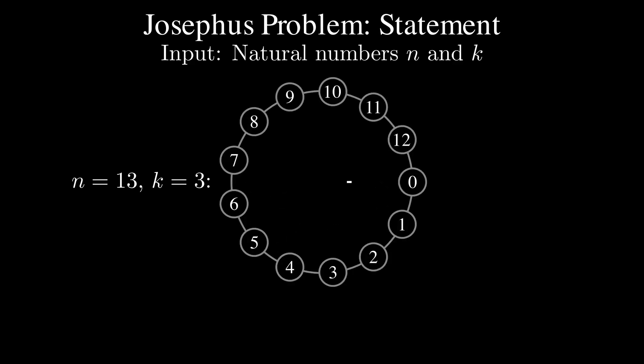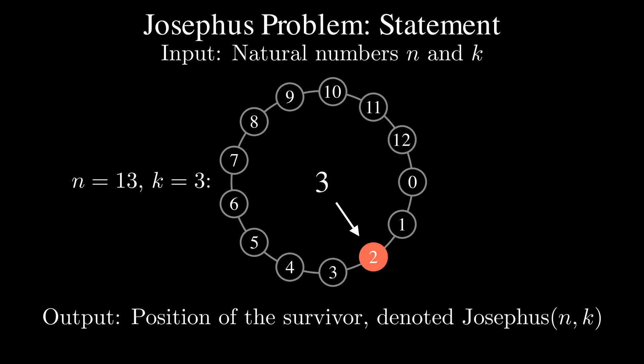The legend gives rise to the following computational problem. Input to the problem is integers n and k. They represent n rebels standing in a circle. Rebels are being eliminated in such a way that every kth rebel around the circle is killed until only one rebel left. Rebels are killed starting from rebel 0, i.e. rebel k-1 is killed first. Tough luck, k-1. Output to the problem is the position of the survivor denoted Josephus(n, k).